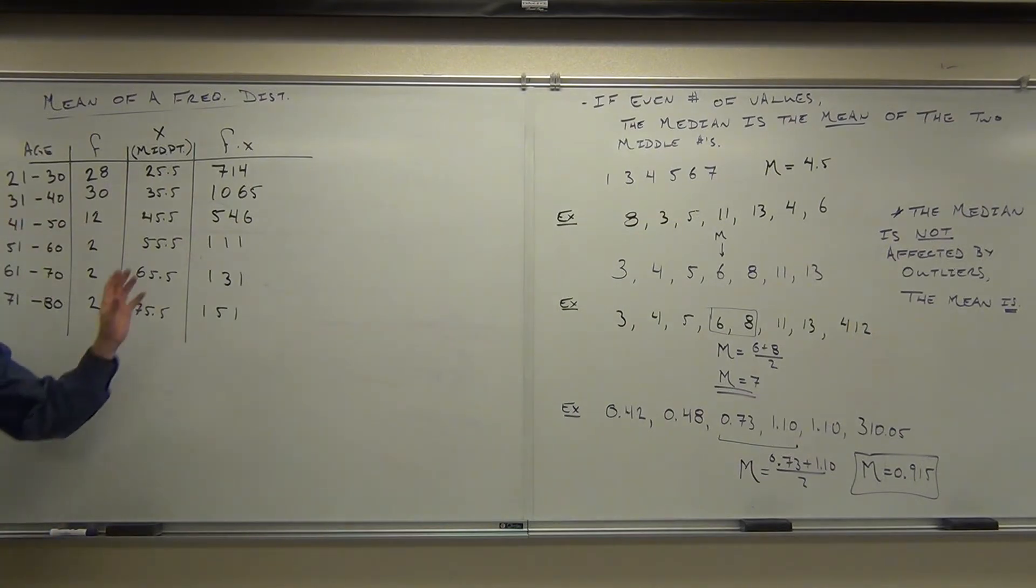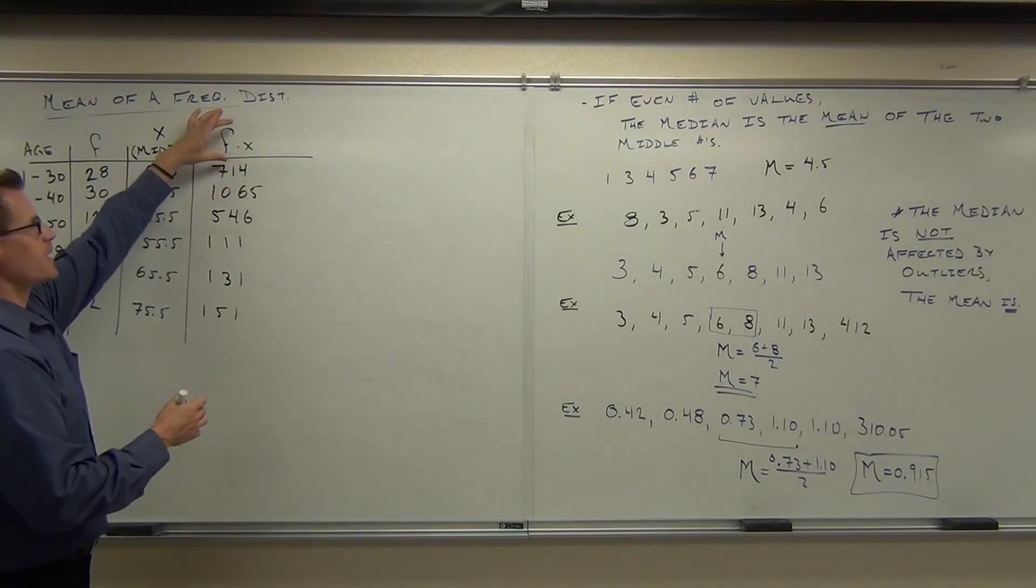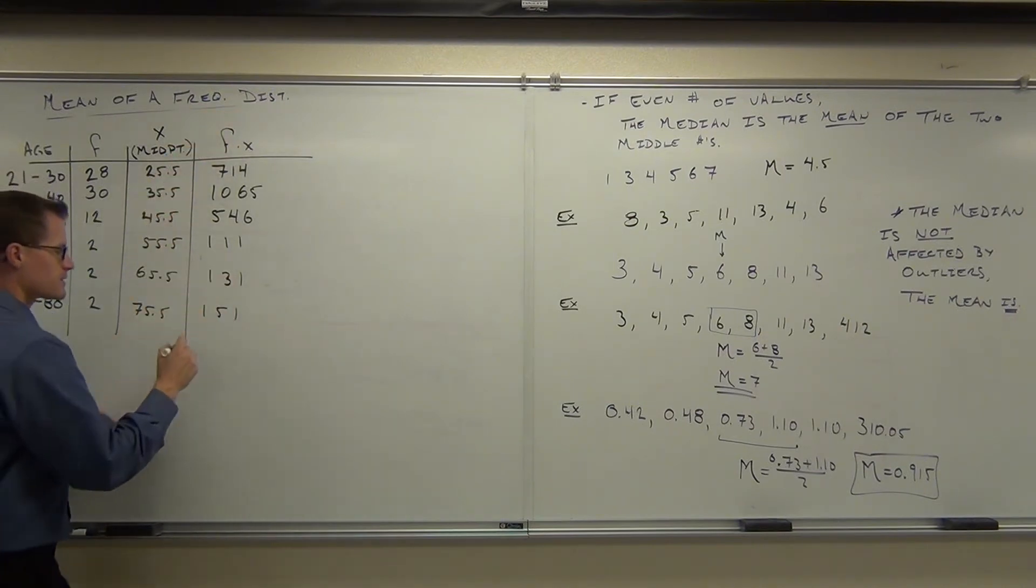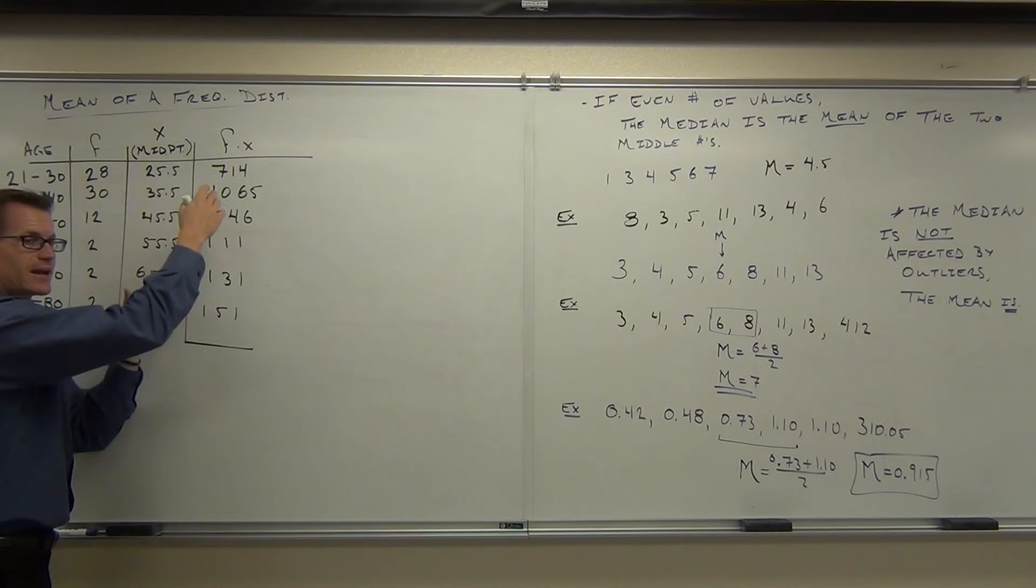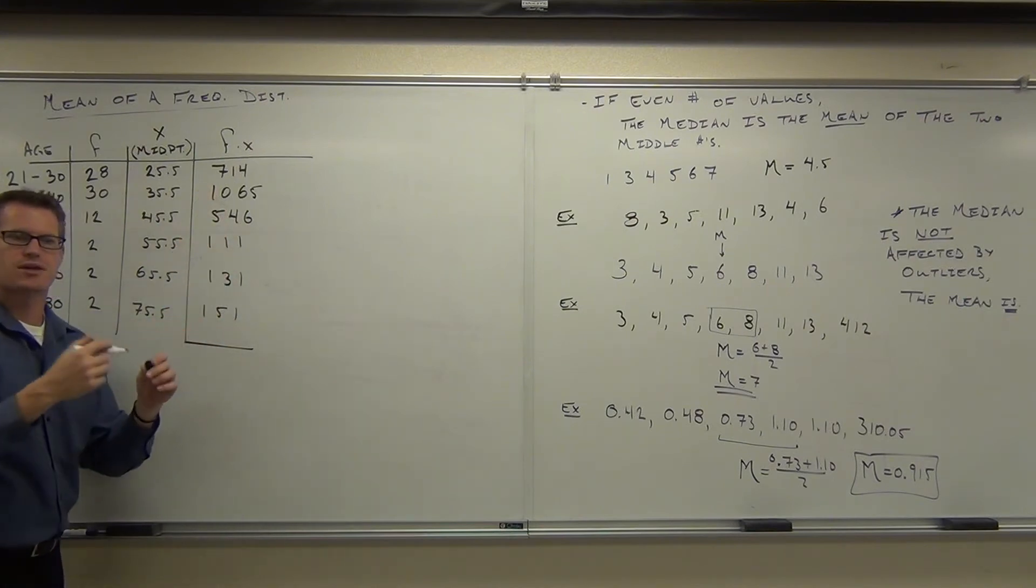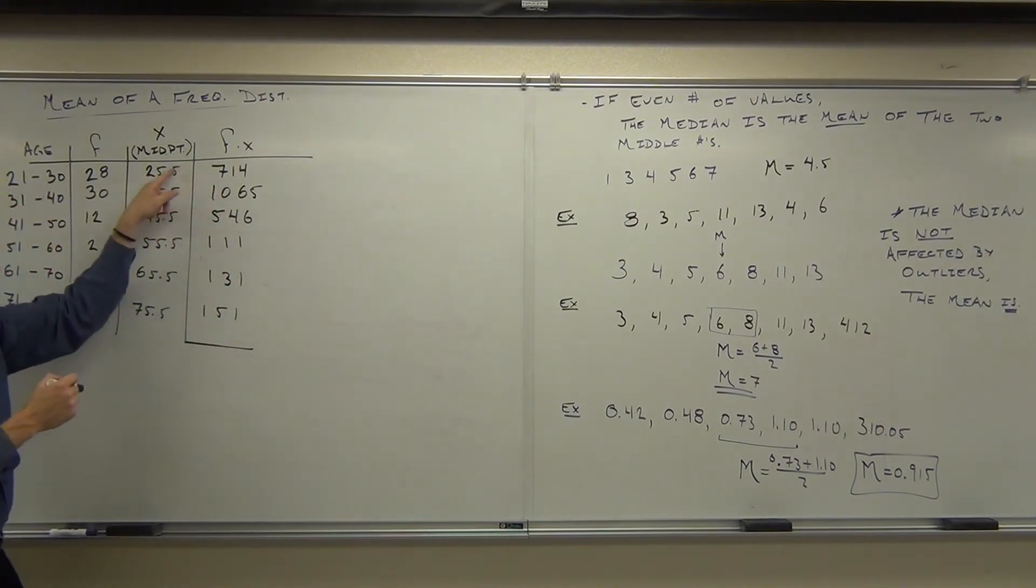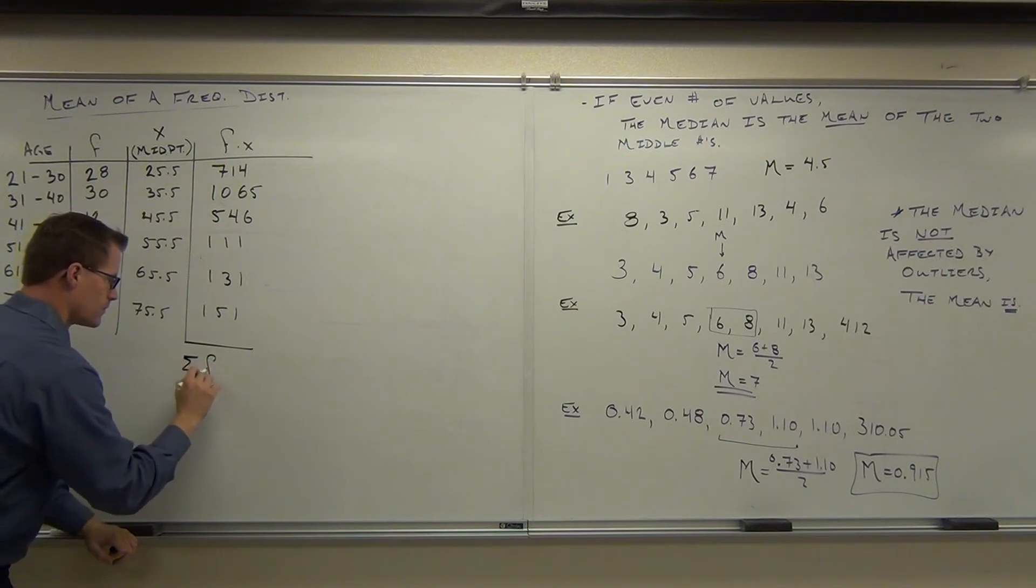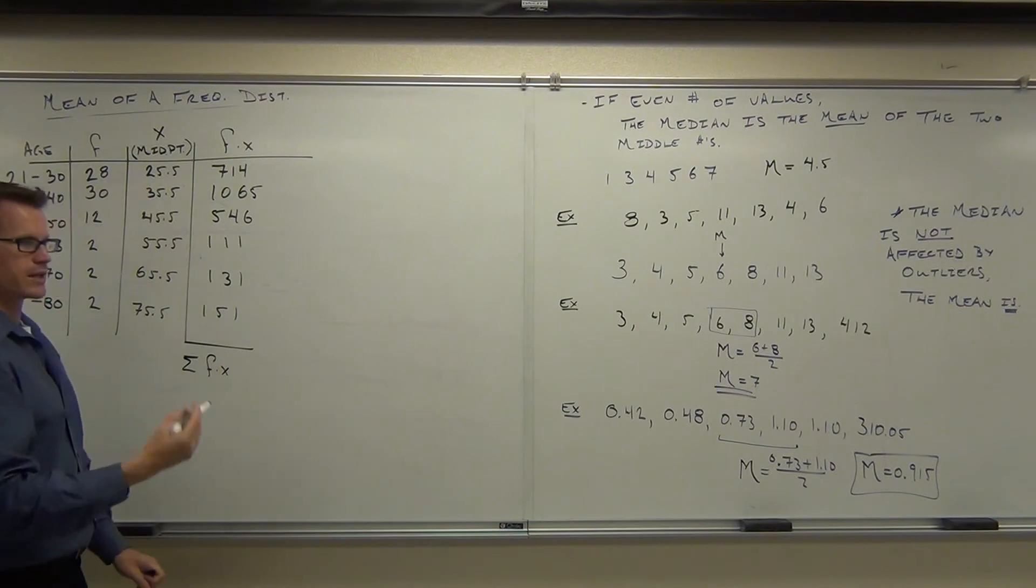Hopefully that math's right. If you double-checked, did someone double-check it? Great. So we have all the frequencies times all of the values that we're considering each of these people to be. What this does, this gives us, if we add it up, all the added ages. See, think about it this way. This right here is all the added ages of 25.5. We added it 28 times. That's the repeated addition, multiplication. Here, this is 35.5, all 30 times. If we add all this up and divide by the total number of people, we're going to get our average.